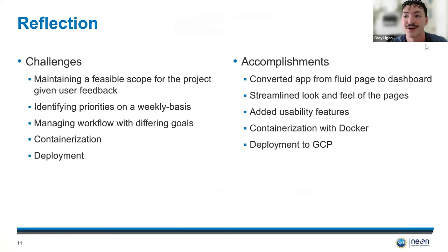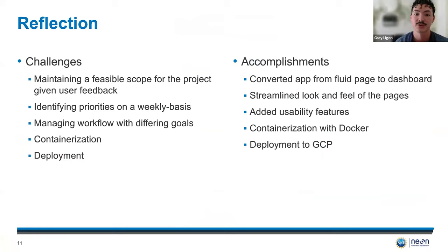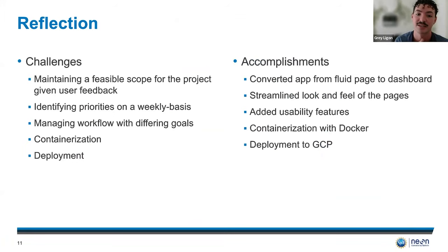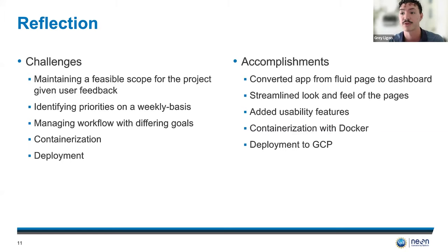Reflecting on the project: the challenges included maintaining a feasible scope, taking in all the user feedback from my mentors, the interest group, and others, and creating a priority list from all of that. Identifying those priorities on a weekly basis was definitely the hardest part — going in every week and deciding what is the most important thing that needs to be done. Managing that workflow across my own personal goals, my mentors' goals, and the interest group's goals was a real challenge over 10 weeks.